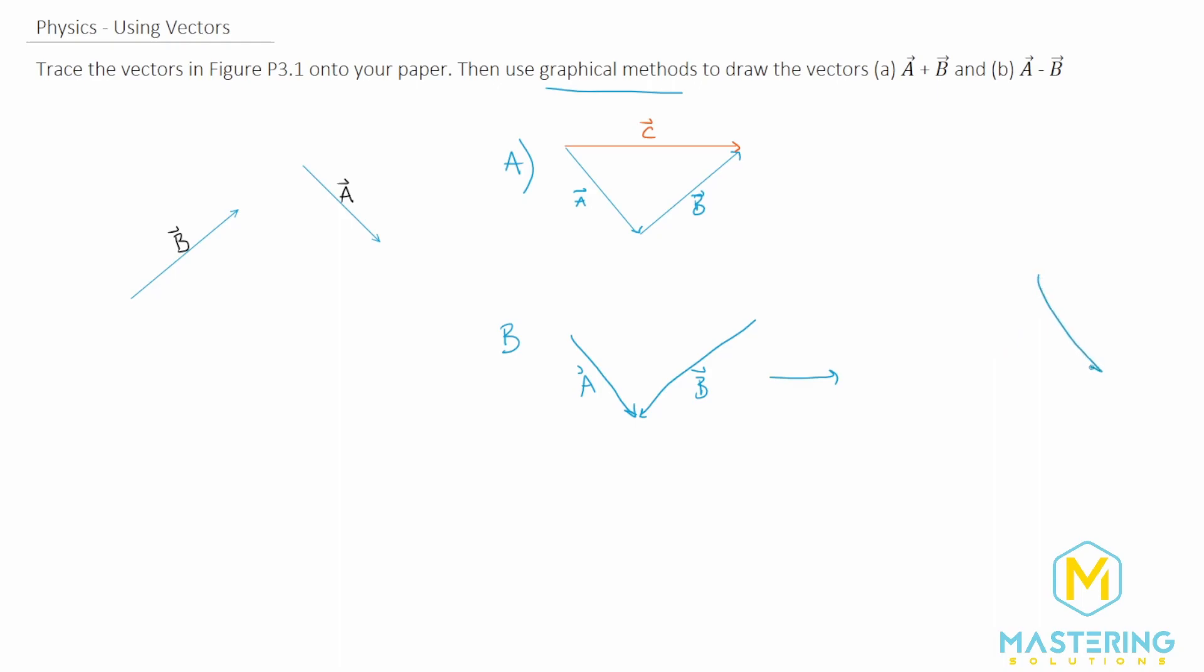So A is going to be the same like that, only B now is going to come down this way. And now when we do the resultant vector, this is A still, and then this is B still. Now when we go tail to tip, the resultant vector C is like that.